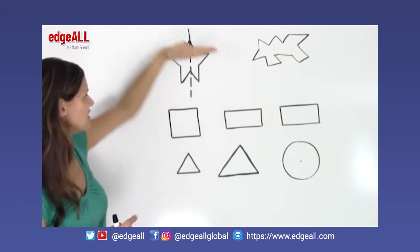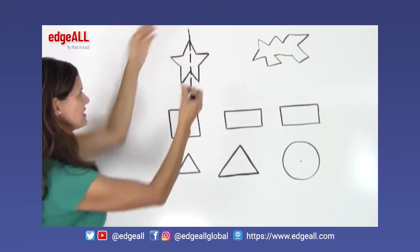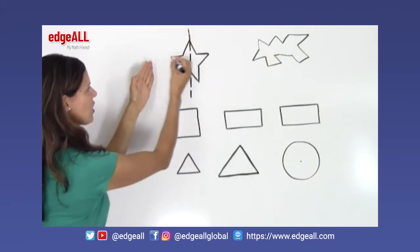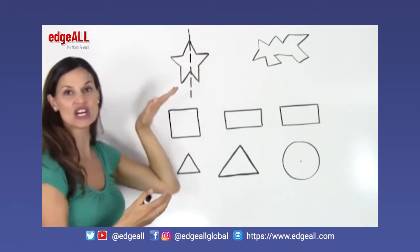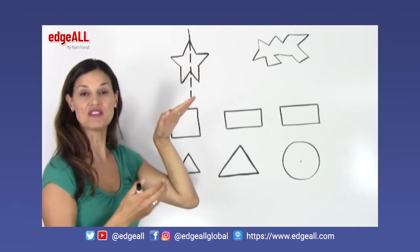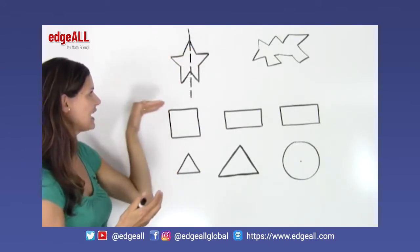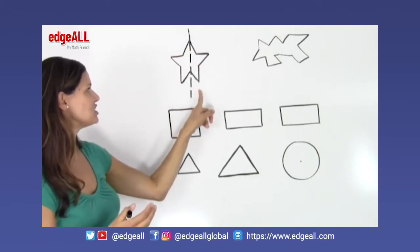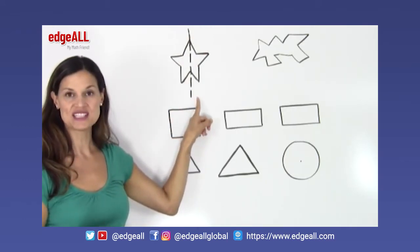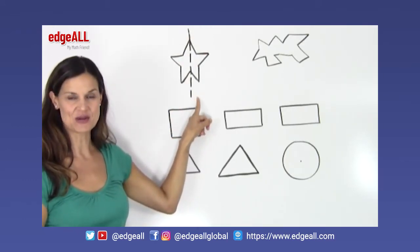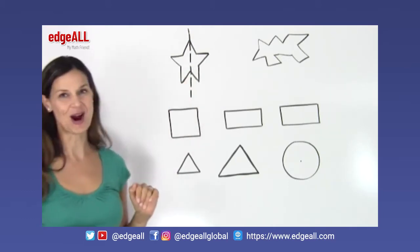Now this shape does not have a line of symmetry going horizontally. Going horizontally, I don't have a mirror image or a reflection across a horizontal line. This shape only has one line of symmetry, which is the line that goes vertically down the middle of my star.